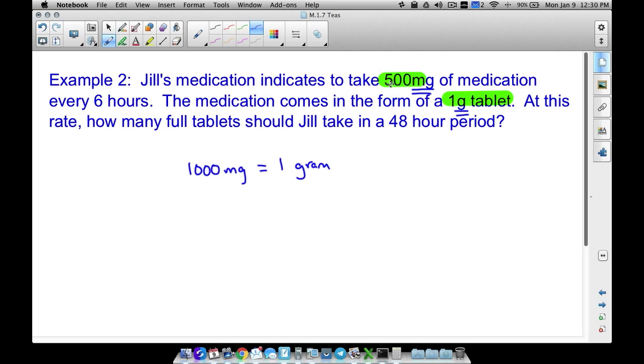If the pill comes in a form of a 1 gram tablet, that's the same thing as 1,000 milligrams. But per dosage, she only needs to take a 500 milligram tablet. So really what she's getting out of a 1 gram tablet, if we take 500 milligrams plus 500 milligrams, that's equal to 1,000 milligrams. And 1,000 milligrams is equal to 1 gram. So it turns out Jill is going to get two doses per tablet.